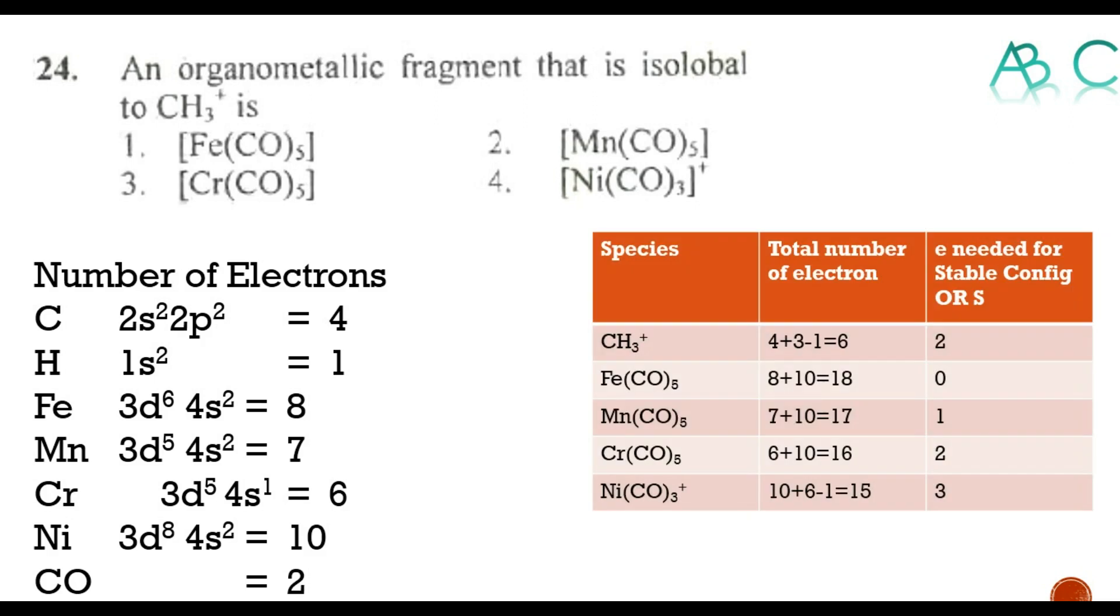From that we can see CH3+ is having 4 plus 3 minus 1 for the positive charge, which gives 6 electrons. Electrons needed for the stable configuration SE equals 2.